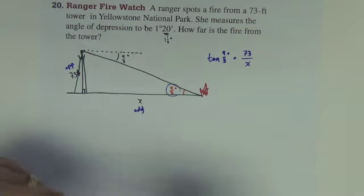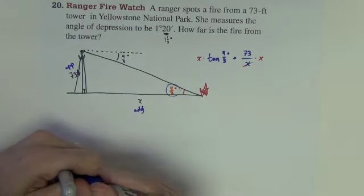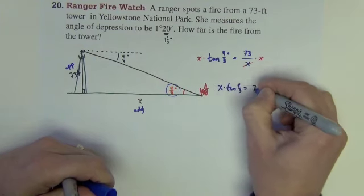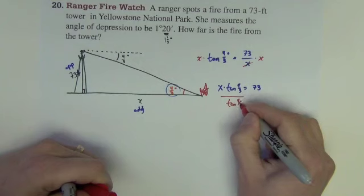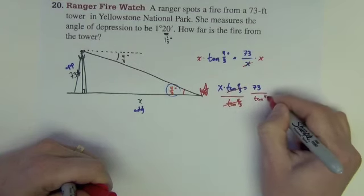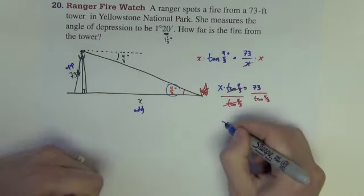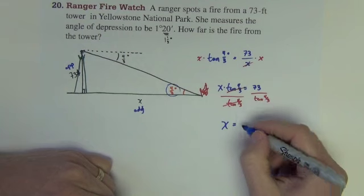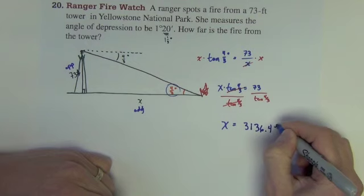Solving this is a two step equation whenever the x is in the denominator. Multiply the x out. That gives us x times the tan of 4 thirds equals 73. Divide both sides by the tan of 4 thirds. And so on the calculator we're ready to go now. x equals 73 divided by tan of 4 thirds. 3,136.4 feet.